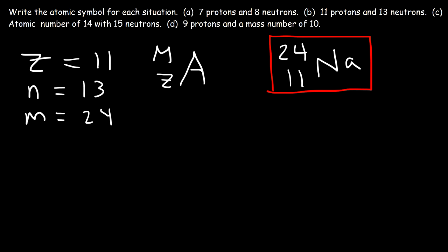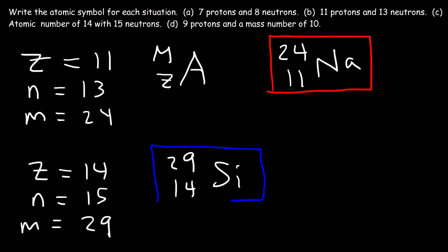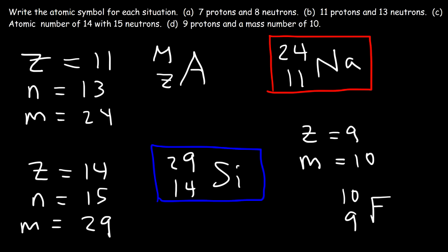For part C: the atomic number is 14 and the number of neutrons is 15, so the mass number is 14 plus 15, which is 29. Atomic number 14 corresponds to silicon, so the answer is silicon-29. For part D: the number of protons is 9, so Z is 9, and the mass number is 10. An atomic number of 9 corresponds to fluorine. This is a rare isotope because it only has one neutron, making it not a stable form of fluorine, but based on the information given, the answer is fluorine-10.